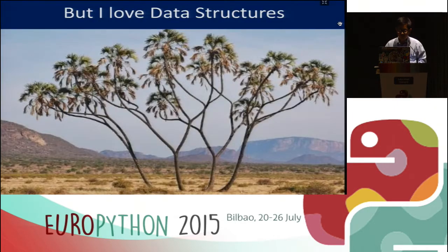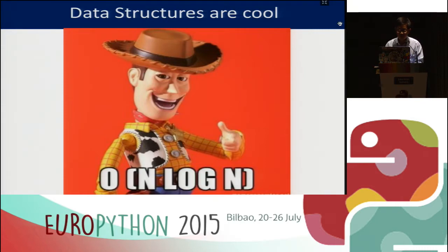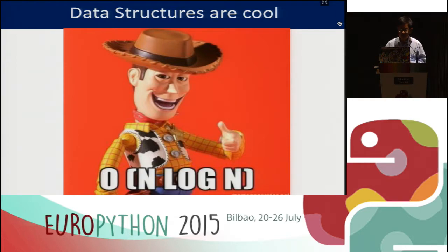I love data structures because algorithms have a lot of independence of operating systems and languages. For example, binary search — the number of steps or measures for sorts are independent of operating systems and languages. The number of steps is the same in Windows, Linux, or in C or in Python.